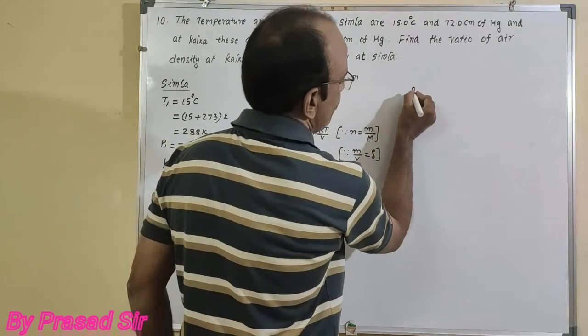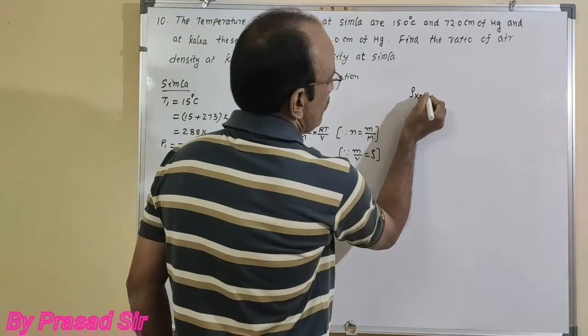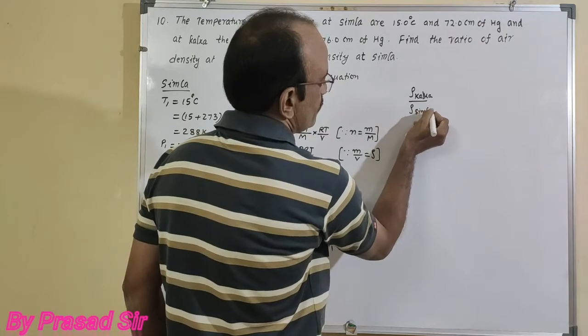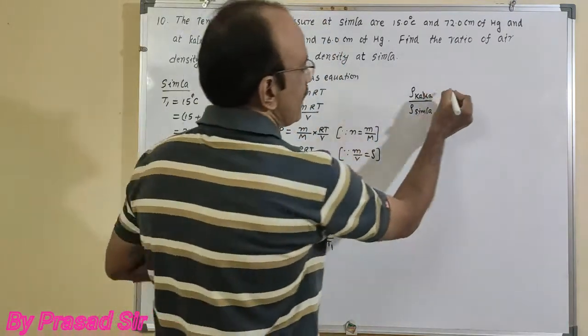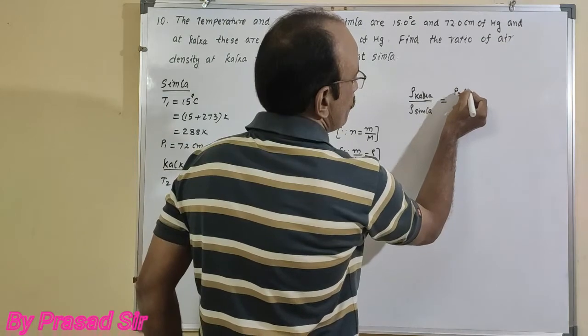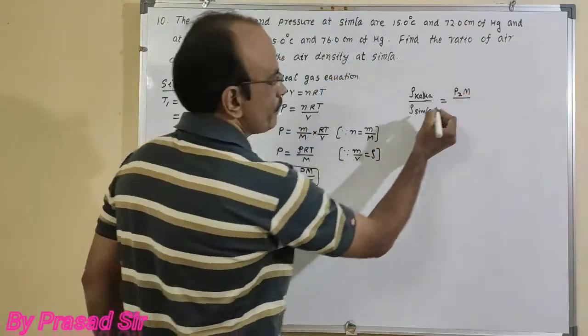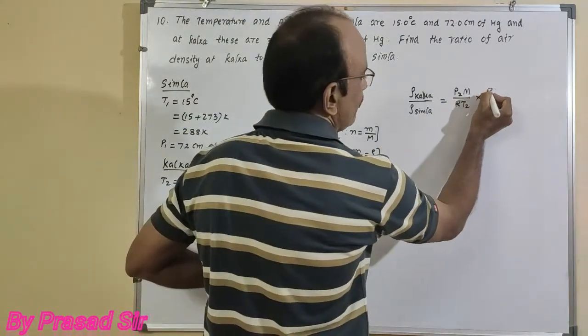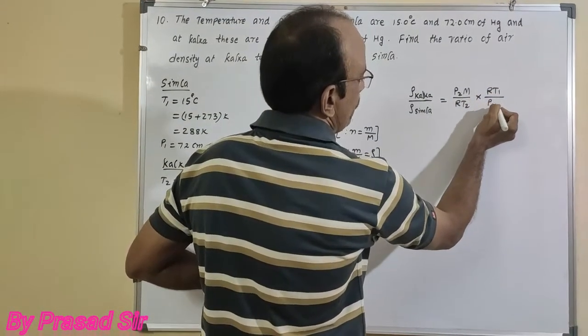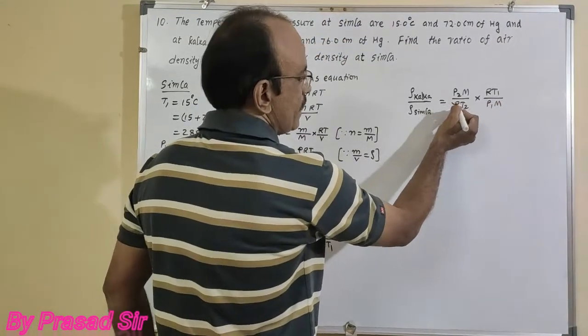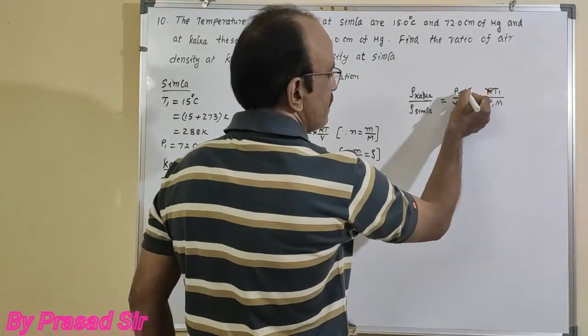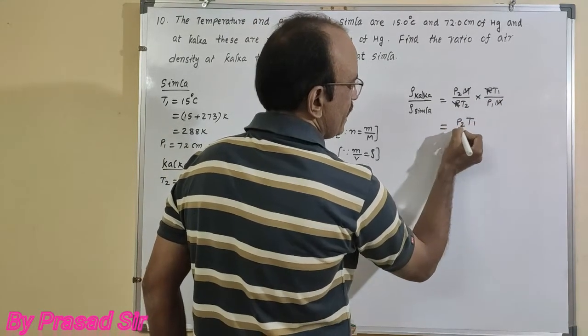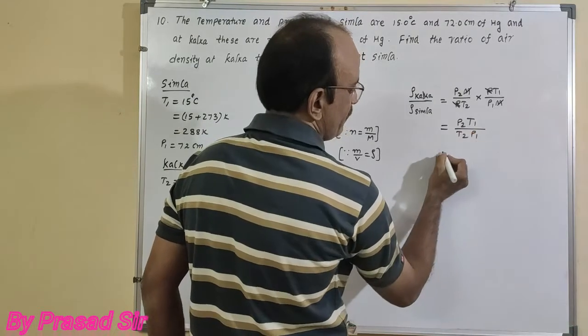So the air density at Calca to Simla is equal to P2M divided by RT2, divided by P1M divided by RT1. R and M cancel. Remaining is P2 T1 divided by T2 P1.